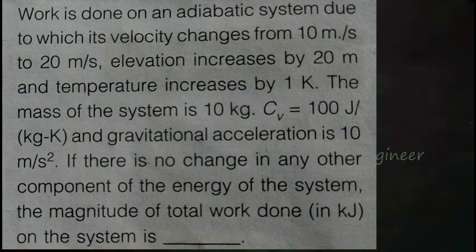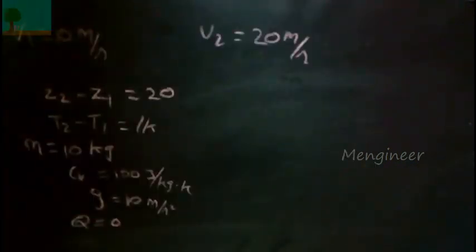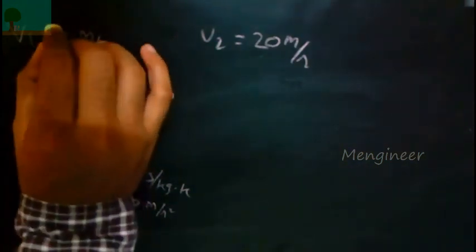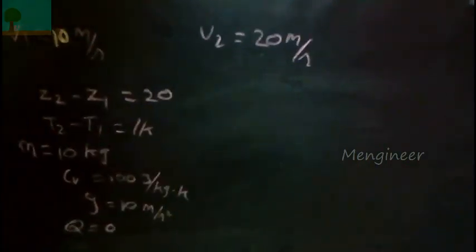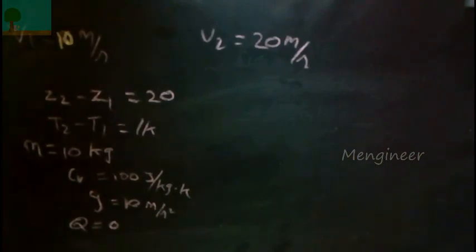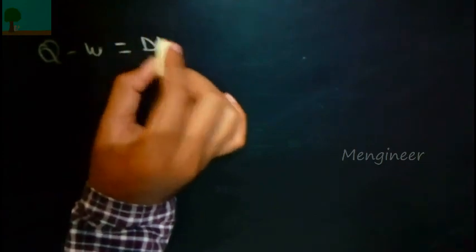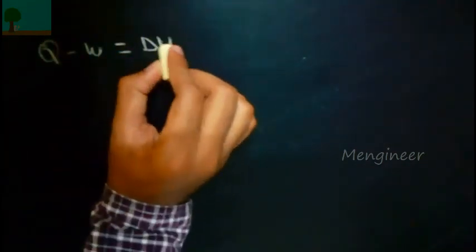If there is no change in any other component of energy of the system, we have to find the magnitude of the total work done on the system. Writing the given data: z2 minus z1 is 20 m, v1 is 10 m/s at the inlet. We have to find the work done — it's an unsteady flow process, so we apply the unsteady flow energy equation: energy in minus energy out equals change in total energy.